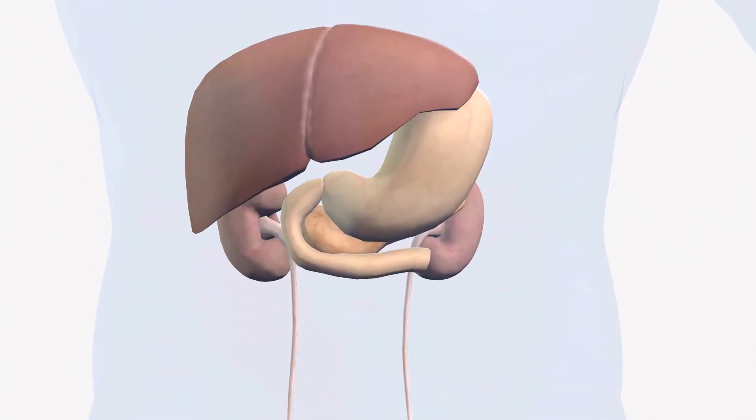Digestive tract: they secrete a lot of variety of hormones and what I mean by the digestive tract I mean the stomach, the duodenum, the small intestines. They produce many hormones such as gastrin, somatostatin, and secretin.